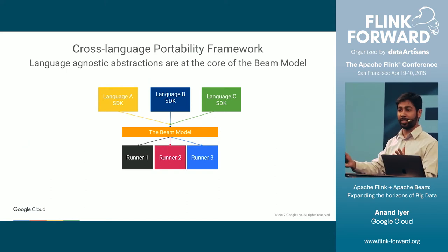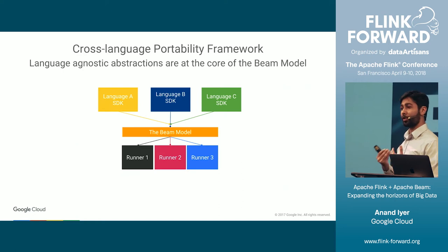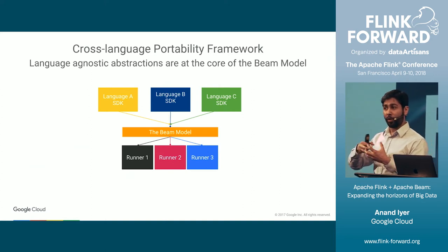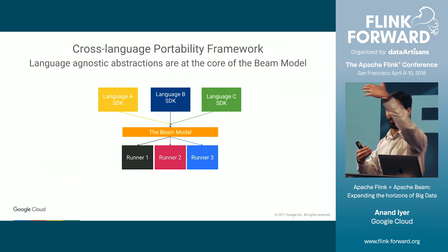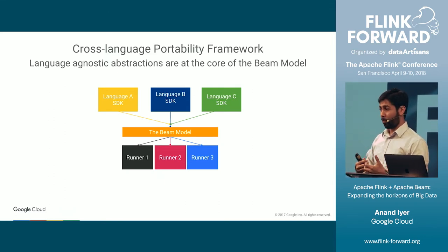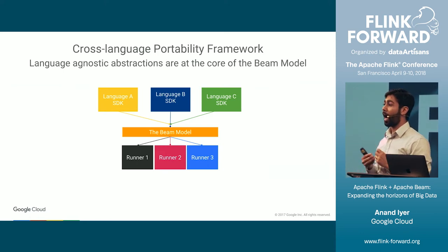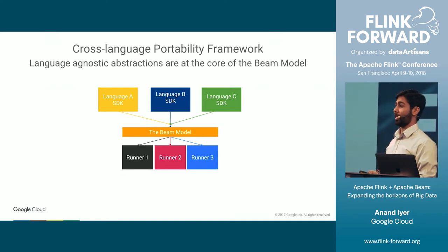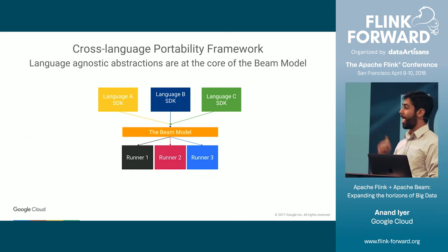In Beam parlance, an execution engine is called a runner. To support multiple different languages, you need the ability to run user-defined code within the runner, and the language of user-defined processing is going to match the language of the SDK. Apache Beam specifies protocols that cleanly define how a runner can invoke language-specific processing, so that an execution engine authored in Java and running on the JVM — as is often the case with big data engines — can execute user-defined code in multiple other languages.